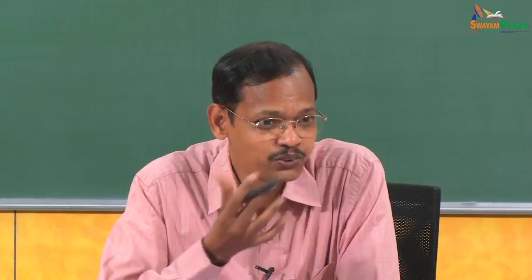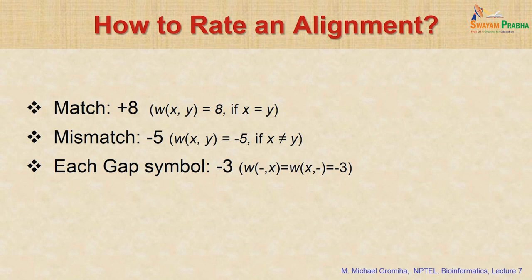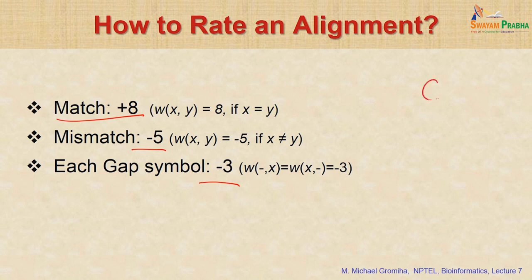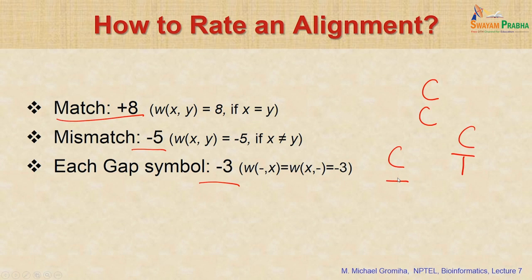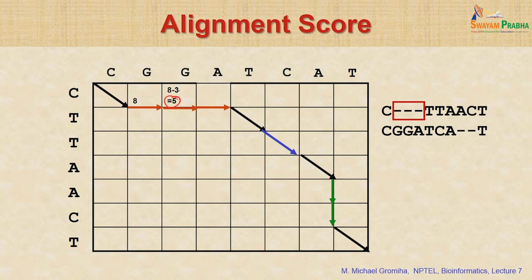The question is which pathway we need to choose — which one is the best. In this case we define a scoring function. For example, if we give a match score of plus 8, a mismatch score of minus 5, and a gap penalty of minus 3, then the weight function w(x,y) equals 8 if x equals y (a match), minus 5 for mismatch, and minus 3 for a gap. For instance, C aligned with gap gives minus 3.